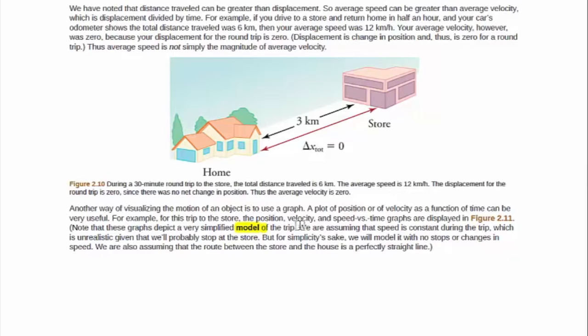In this example, the model has a lot of assumptions. You're assuming that the speed is constant during the trip. Of course, this is unrealistic, but it makes the problem easier. And a lot of the time, you don't care.